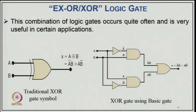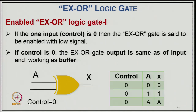The Boolean expression for exclusive OR is X = A⊕B = A'B + AB'. This can be implemented using basic logic gates: A goes through a NOT gate to give A', then A'B through an AND gate, and AB' through another AND gate, with the two AND outputs combined in an OR gate to give X = A'B + AB'.